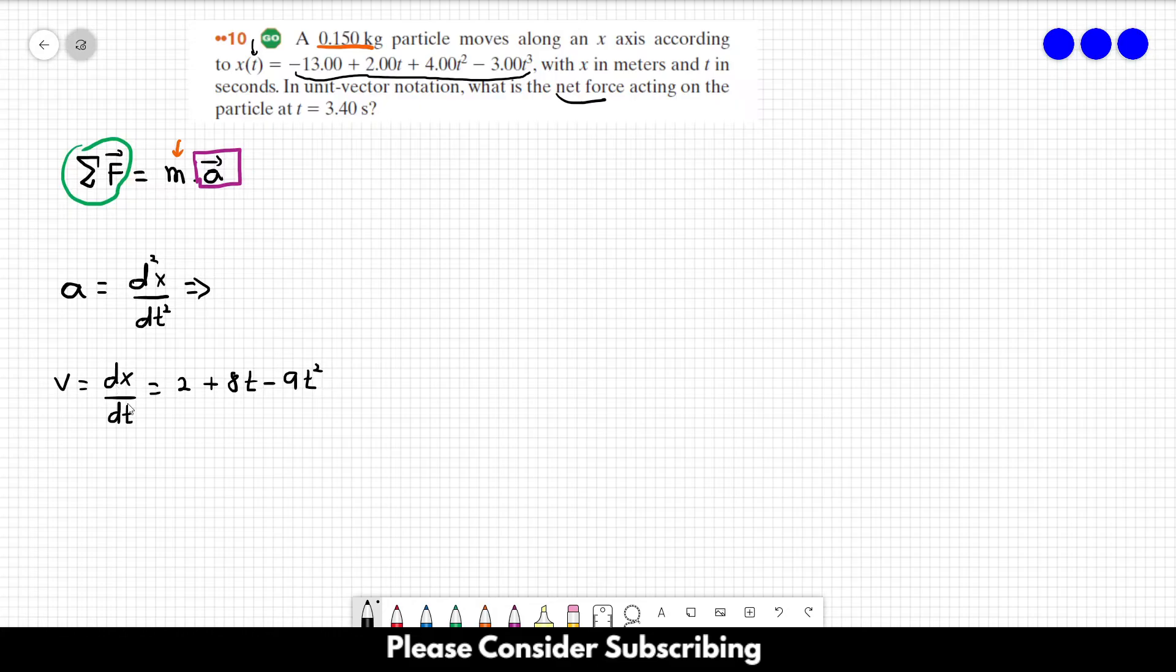The derivative of this function, which is the acceleration, is the second derivative of position. This equals 8 - 18t. This is the acceleration.